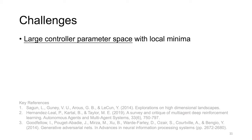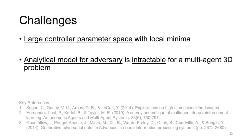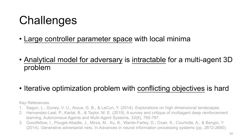The two objectives are hard to achieve even separately. On the one hand, the controller running on each robot has 17 parameters, and the global optimum may not be easily found with conventional approaches in a large parameter space with many local minima. On the other hand, the analytical model for the adversary is intractable for a multi-agent 3D problem. Furthermore, the two objectives are conflicting, making the optimization problem hard to solve and difficult to lead to convergence when approached iteratively.